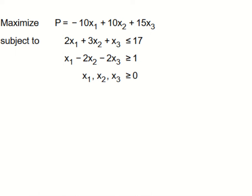In this video we'll solve a problem where we want to maximize an expression with mixed problem constraints. The first inequality is with less than or equal to, and the second inequality is with greater than or equal to. The method we'll use is called the Big M method.